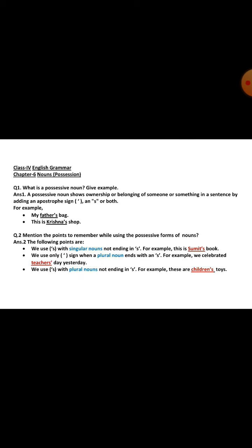The last point: we use apostrophe S with plural nouns not ending in S. For example, 'These are children's toys.' The word Children, C-H-I-L-D-R-E-N, is the plural form of a noun, but it does not end with the letter S. So that's why we use the apostrophe S here. These are the points you need to be careful about while using possessive nouns.